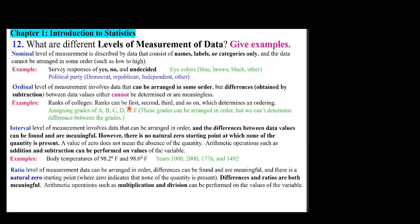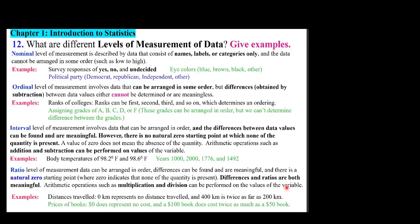Ratio level of measurement: data can be arranged in order, differences are meaningful, and there is a natural zero starting point where zero indicates none of the quantity is present. Both differences and ratios are meaningful, and multiplication and division can be performed. Examples include distance — zero kilometers means no distance traveled, and 400 kilometers is twice as far as 200 kilometers — and prices of books, where zero dollars means no cost and a $100 book costs twice as much as a $50 book.